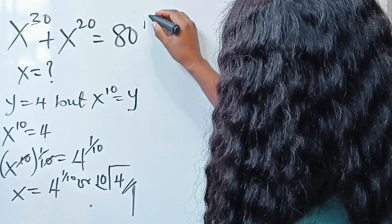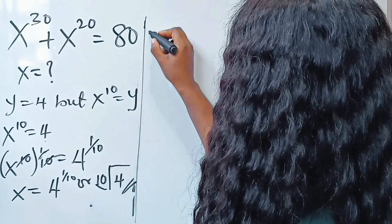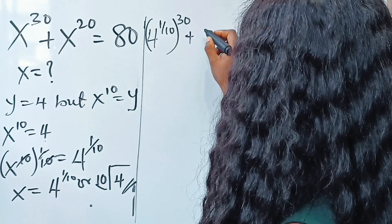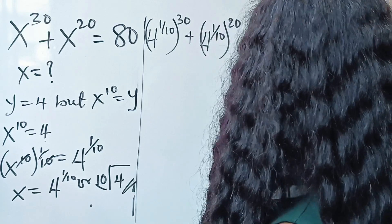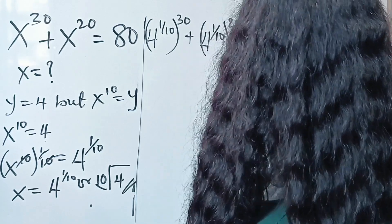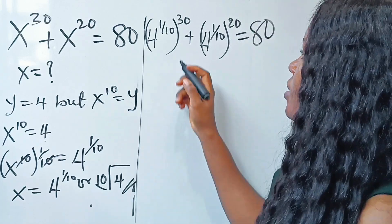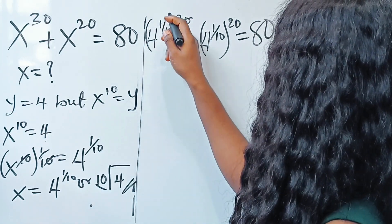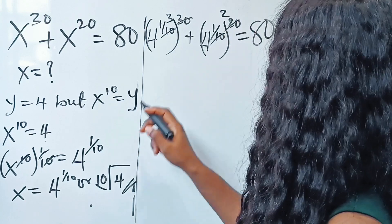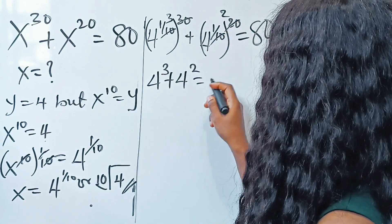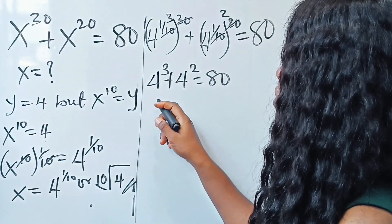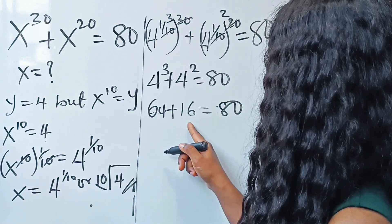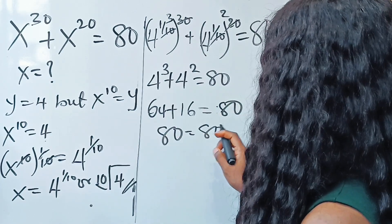Let's substitute back to verify. We have 4 to the power of 1 over 10, raised to the power of 30, plus 4 raised to the power of 1 over 10, raised to the power of 20. Multiplying the exponents: 4 to the power of 3 plus 4 to the power of 2, which is 64 plus 16, equals 80. Confirmed — equal to 80.